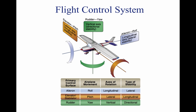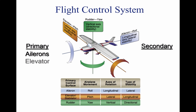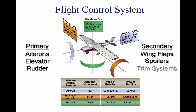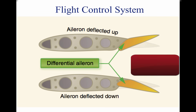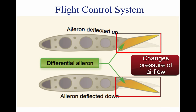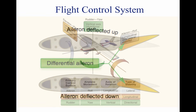There are two types of flight control systems: primary systems and secondary systems. Primary systems consist of ailerons, elevator, and rudder. Secondary systems consist of wing flaps, spoilers, and trim systems. The primary control system changes the pressure of the airflow around the airfoil. These changes in the airflow allow a pilot to move the aircraft around its three axes of rotation.